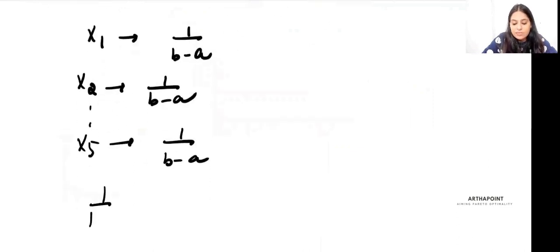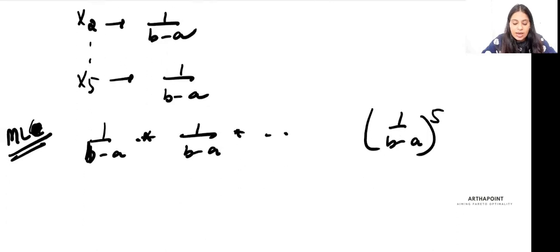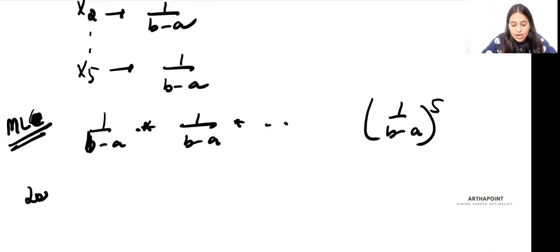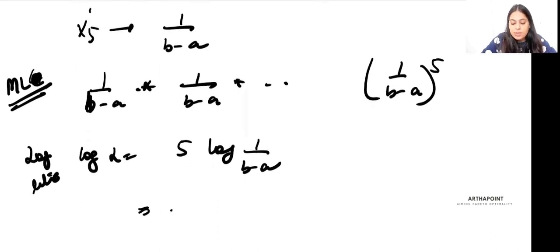Because they are independent, I multiply each of their PDFs and get (1/(B-A))^5. This becomes my maximum likelihood function. Now I find the log likelihood function by taking log on both sides: log L = 5 log(1/(B-A)) = -5 log(B-A).